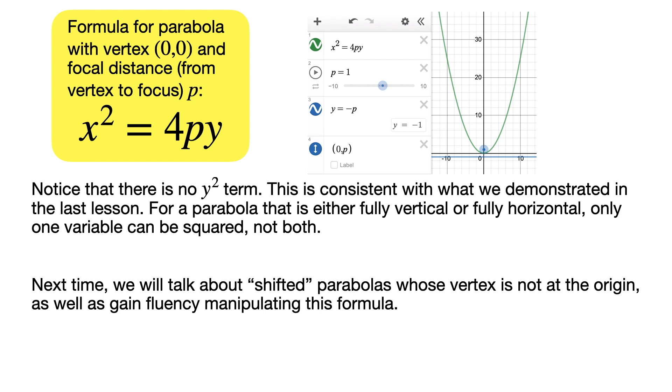Notice that in this formula, there's no y squared term, there's only x squared. This is consistent with what we demonstrated in the last lesson. For a parabola that is either fully vertical or fully horizontal, only one of the variables can be squared, but not both. If you want to have a horizontal parabola, y squared is going to be the squared term and x is going to be the one without a square.